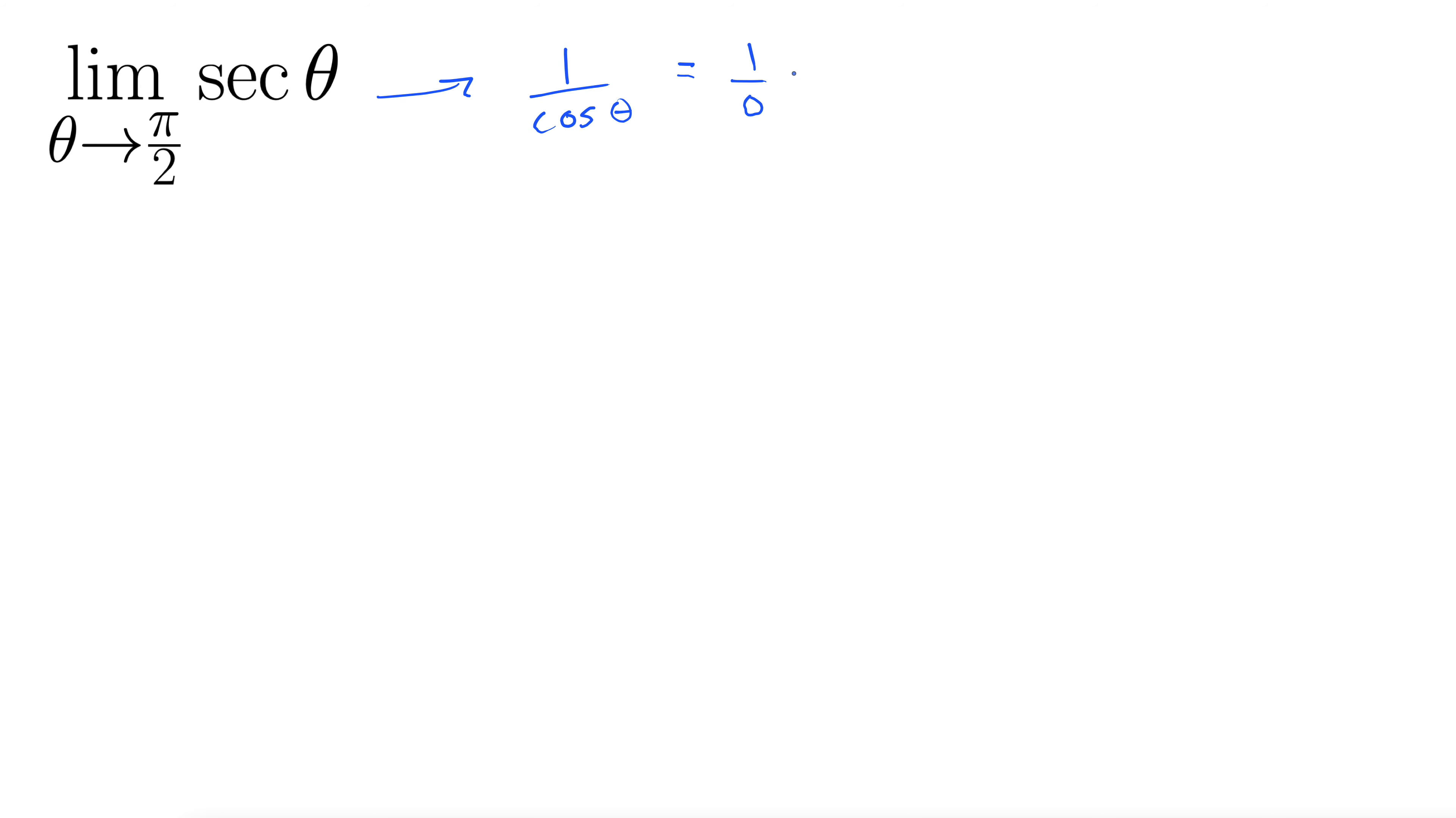It's either going to be positive infinity, negative infinity, or it does not exist, depending upon what happens to these one-sided limits as we approach π/2 from the left and from the right.